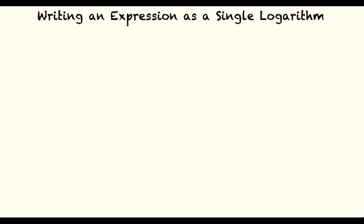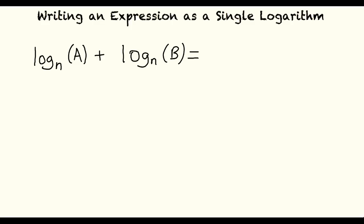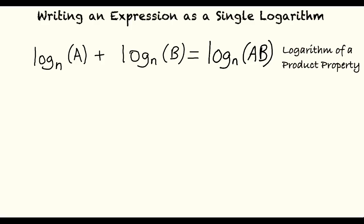To begin, let's go over the three properties of logarithms. Firstly, the logarithm of a product. This property allows us to simplify expressions of the form log base n of a plus log base n of b, which equals log base n of a times b. This property allows us to combine two logarithmic expressions with the same base n. The a and b variables can represent a variable, a constant, or even another expression. When adding logarithms with the same base, multiply the arguments together to result in the simplified expression of the logarithm.